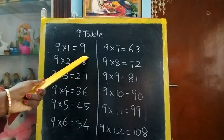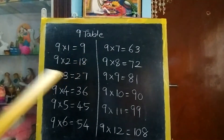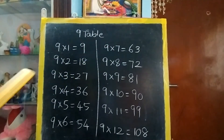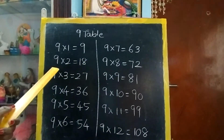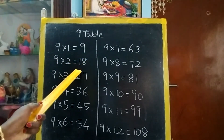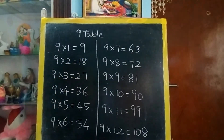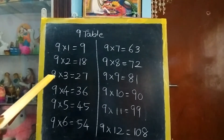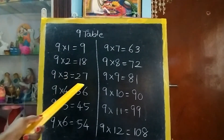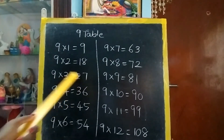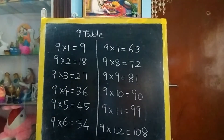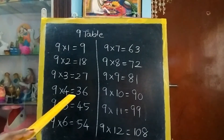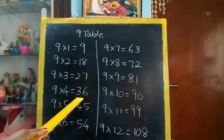9 1's are 9. 9 2's are 18. 9 3's are 27. 9 4's are 36.